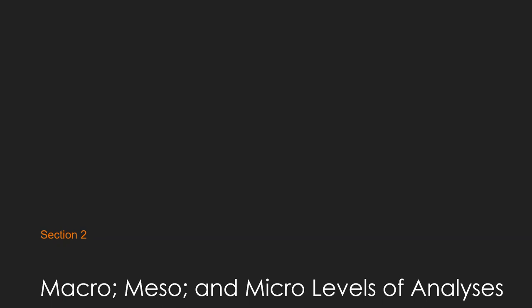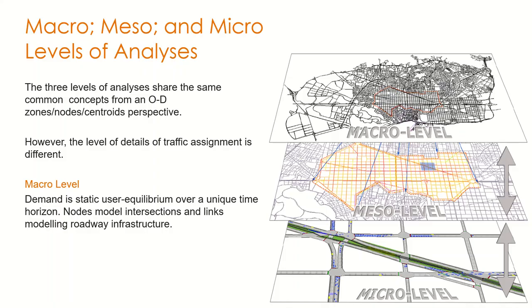Section 2 discusses macro, meso, and micro levels of network analyses. There are three levels of network analyses, whether in terms of transportation or traffic assignment or from a traffic analysis perspective. The first level is macro, typically the highest level — a high-level analysis or modeling over a large network. These analyses are used for traffic demand assignment rather than for studying or investigating network performance.